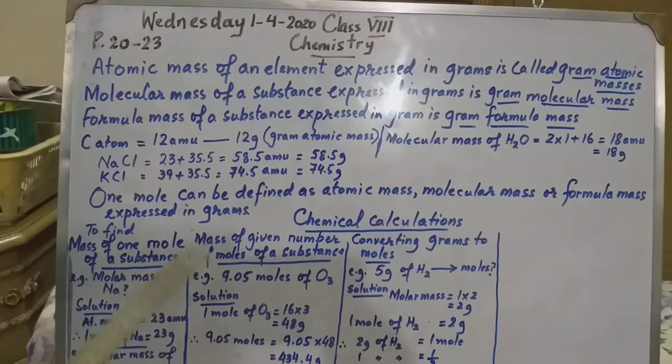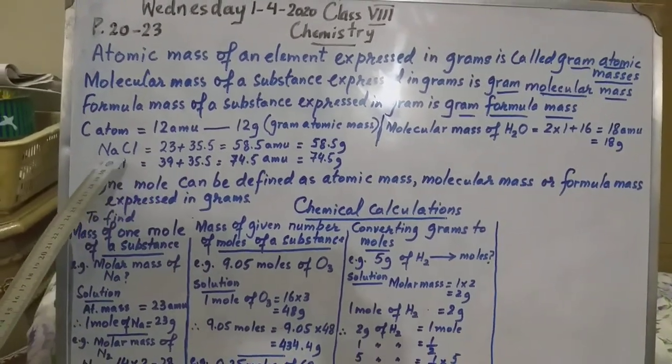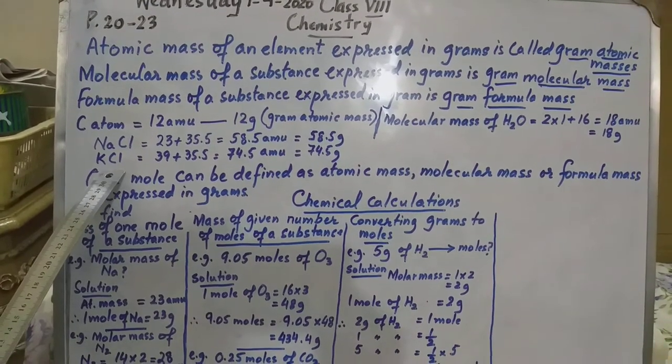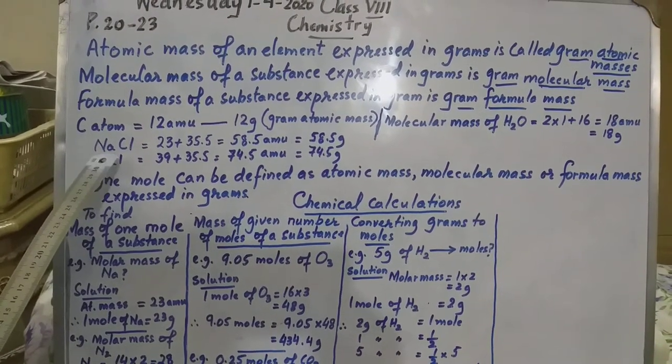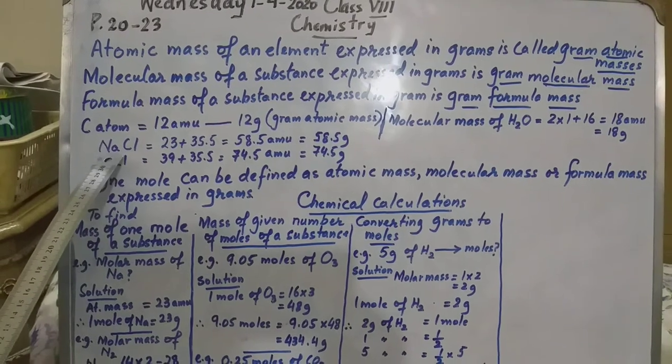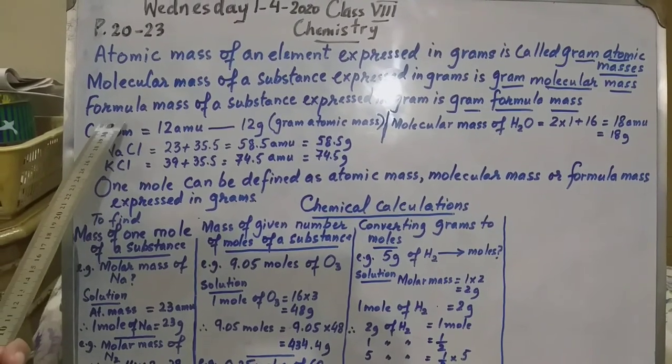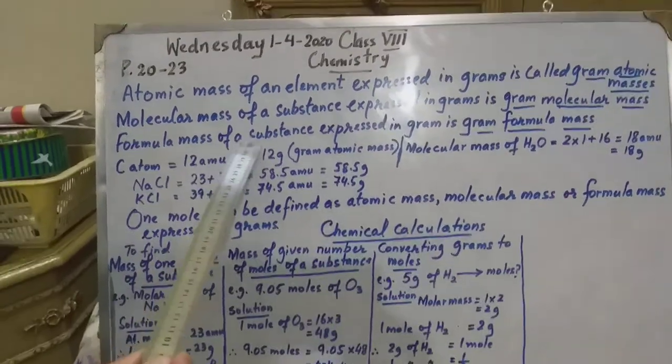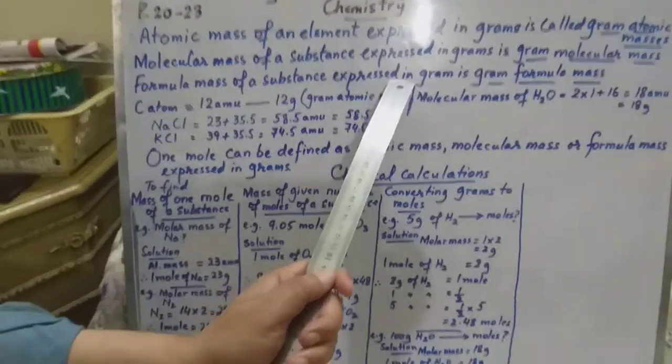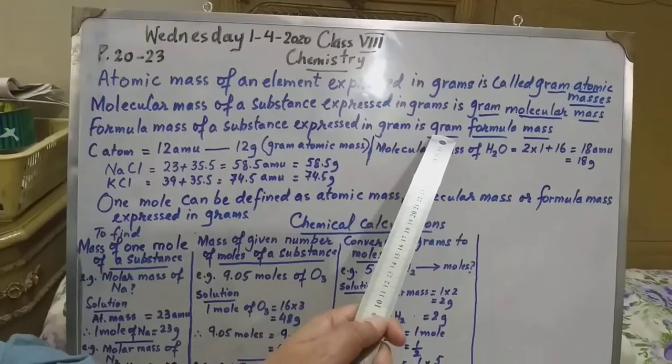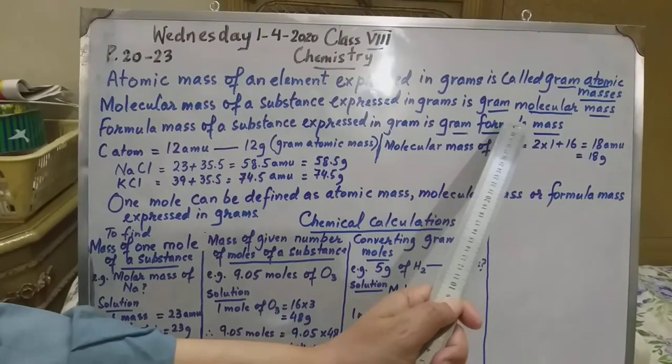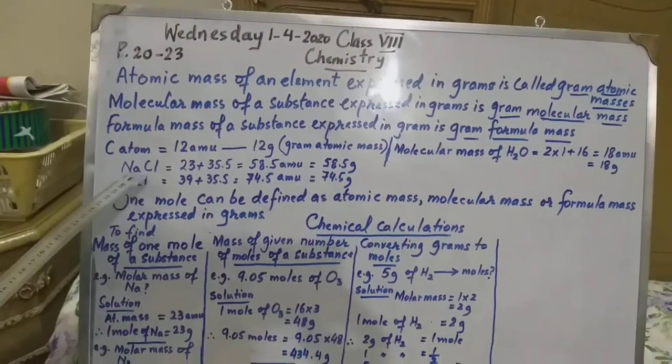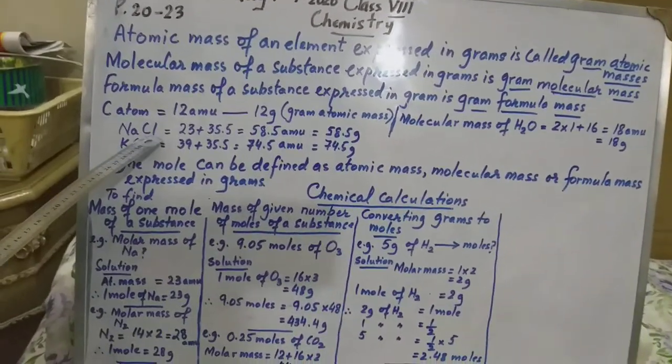There are some substances that exist in ions. For example, here is sodium chloride and potassium chloride. This is not a molecule. This is not atoms. These are ions. Then we use formula mass. Formula mass of a substance expressed in grams is gram formula mass. For example, sodium chloride is a popular name.